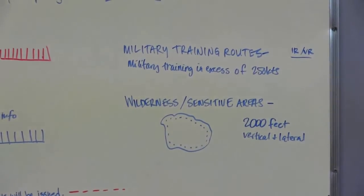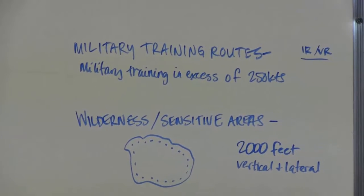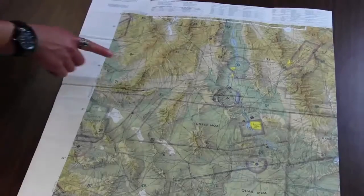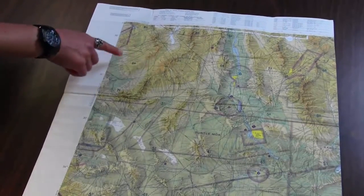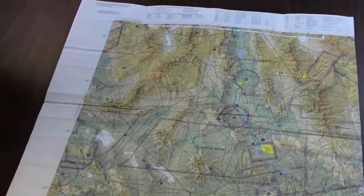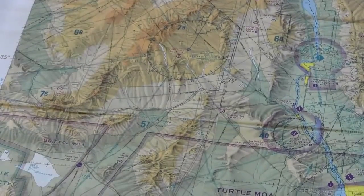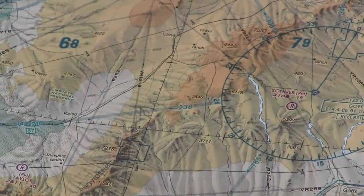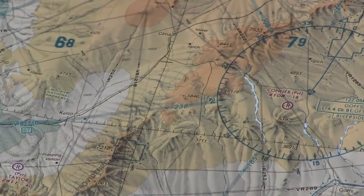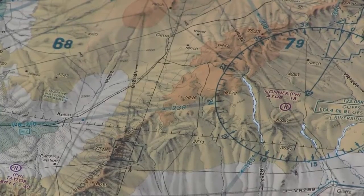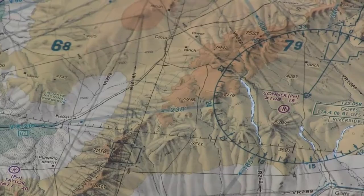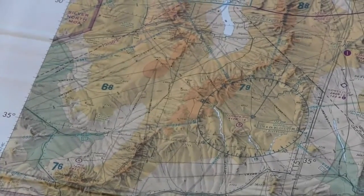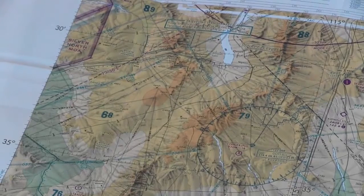Military training routes are areas where flying in excess of 250 knots occurs. On the sectional, here are two examples — an IFR and a VFR route. They're depicted in grey, which is different from VFR airways depicted in blue. Generally, military training routes are established below 10,000 feet MSL. Routes at and below 1,500 feet AGL are designed to be flown under VFR; routes above 1,500 AGL are primarily flown under IFR. You're not restricted from flying through, but you should check with flight service within 100 nautical miles for current activity information.